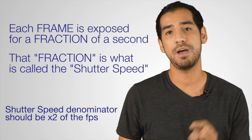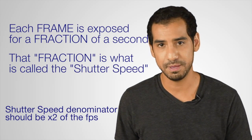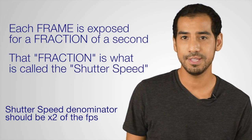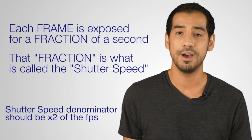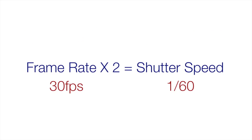As a general rule of thumb, you want the denominator of your shutter speed to be about double the number of your frames per second. So if you're recording at 30 frames per second, you'd want your shutter speed to be 1/60th of a second — that is double your frame rate.